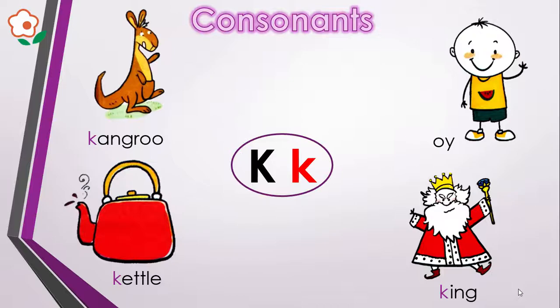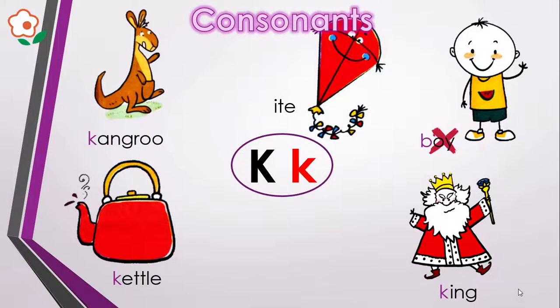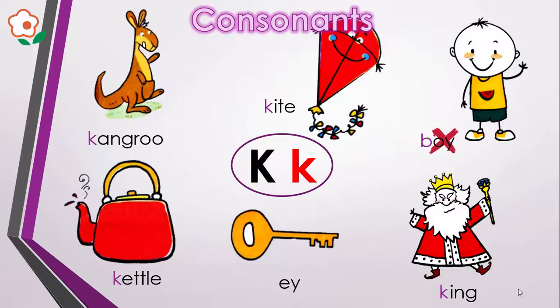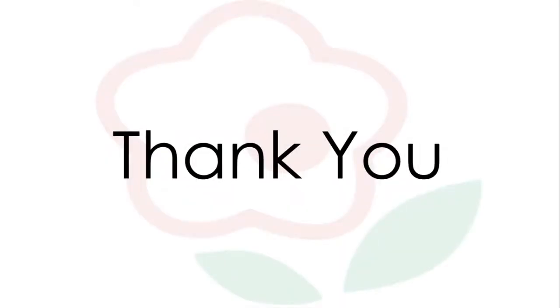And here we have a boy. Say boy and focus on the beginning sound. Boy. B. Here we have a picture of kite. Say kite. Kite is beginning with K, so we will write K. Say key and tell me what is the beginning sound of key. Yeah, it's K. Good. Thank you for watching this video — if you like this video, please subscribe to our channel for more informative videos.